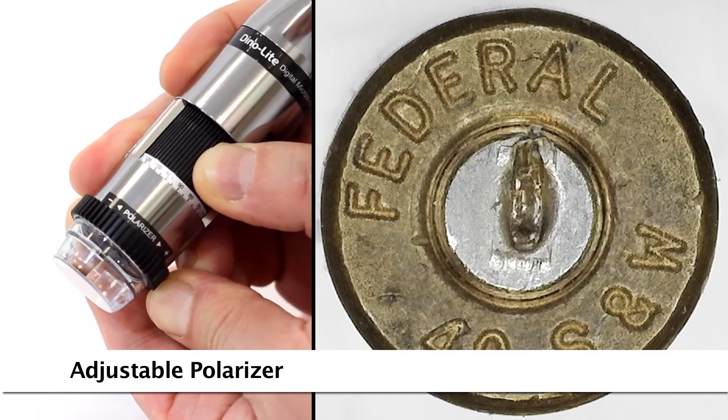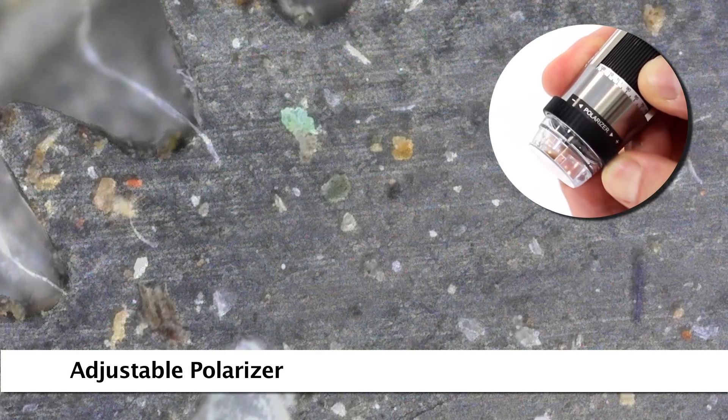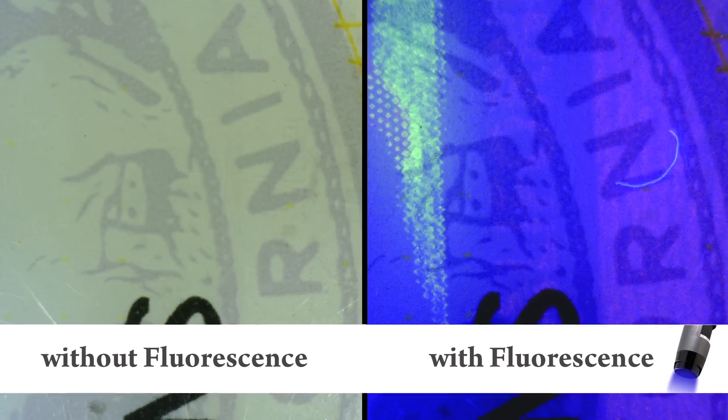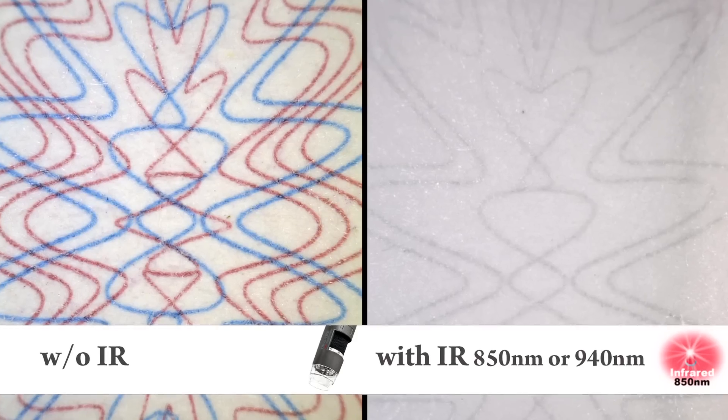Some models have a built-in adjustable polarizer that helps to provide more clarity and different results in imaging. There are many fluorescence models with varying wavelengths for different applications.